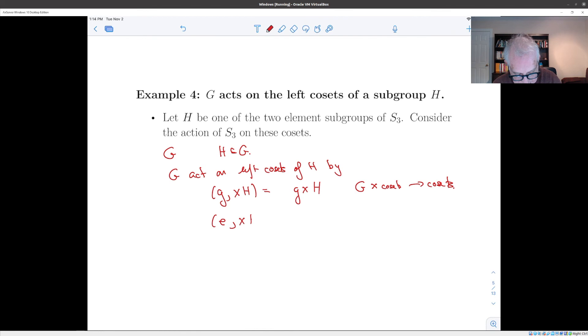And sure enough, if you put the identity element in, you get multiplication by the identity, which is xH. And if you apply g_2 to xH, so this by definition is g_2 xH, and then you apply g_1 to that, which by definition is g_1 g_2 xH, which is the same thing as taking g_1 g_2 and multiplying it times xH.